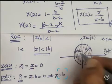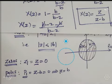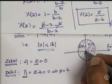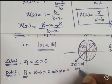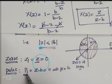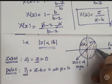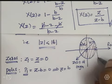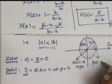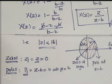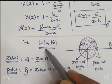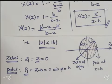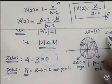One zero is present at the origin, indicated by a circle (O) at (0,0). One pole is present at Z = B, indicated by a cross mark (×). So we have calculated the Z-transform, ROC, zeros, and poles for the negative time exponential sequence, and represented all of them on the Z-plane.